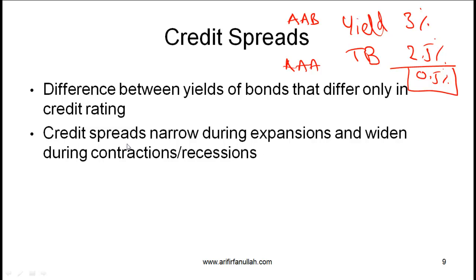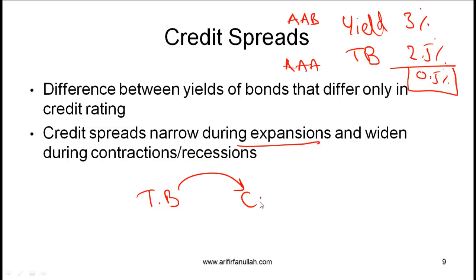In general, many investors believe that credit spreads narrow during expansions and widen during contractions or recessions. During expansions, everybody is confident about the economy, seeking higher returns and higher yields. There is greater confidence that companies will be able to generate cash and pay interest and principal on their bonds. So money flows away from Treasuries towards corporate bonds.